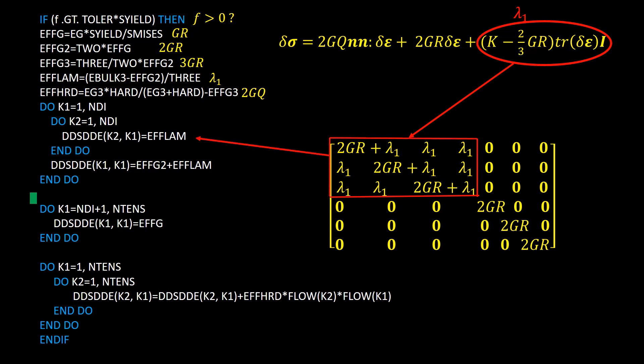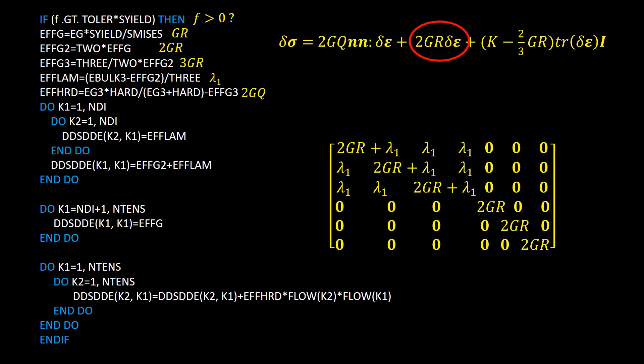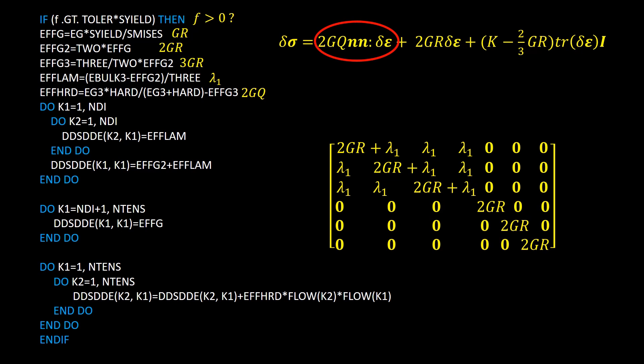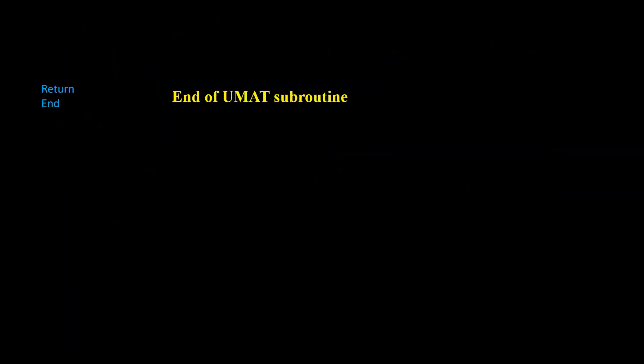The third term adds lambda 1 to all components of the first 3×3 sub-matrix of the Jacobian. The second term adds 2GR to all diagonal components — the first three diagonal components are modified, followed by the next three. The first term is then added to all components of the Jacobian matrix. Finally, do not forget to end your subroutine with the required closing lines. If this video was helpful, please let us know with a like or comment, subscribe to the channel, and watch more videos about mechanics and simulations.